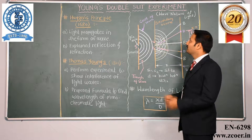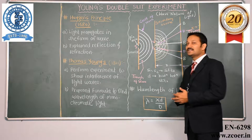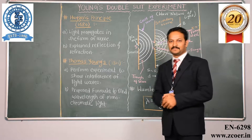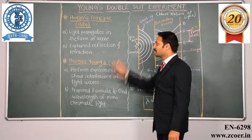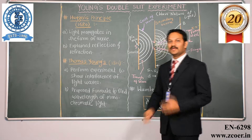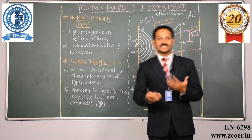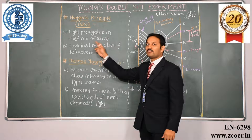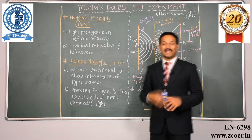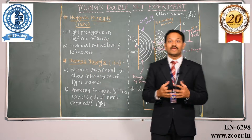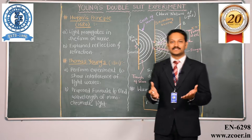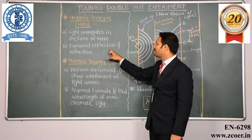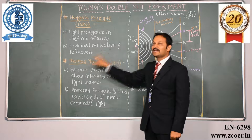Before going into details of Young's double slit experiment, let us know what is Huygens principle. According to Huygens principle, he demonstrated and explained to us that light propagates in the form of a wave, which means light has wave nature — it is not a particle nature. Secondly, he explained to us the concept of reflection and refraction.